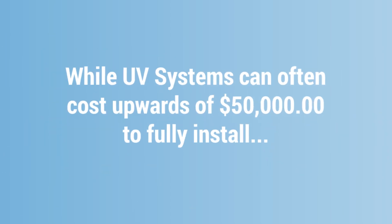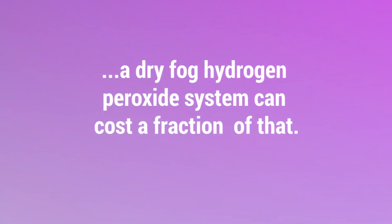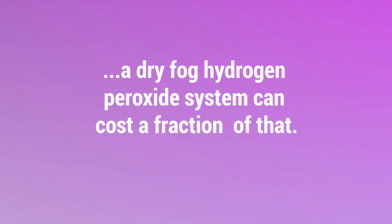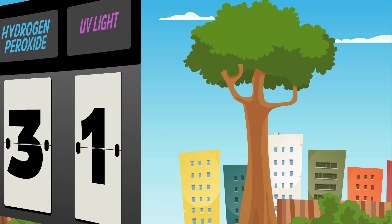It used to be that UV systems were much cheaper than big installed vaporized systems. However, those days have changed. While UV systems can often cost upwards of $50,000 to fully install, a dry fogged hydrogen peroxide system can cost a fraction of that. Looks like dry fogged hydrogen peroxide takes this round as well.